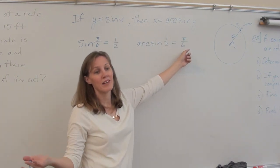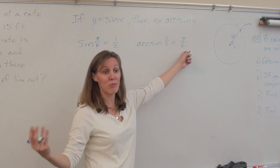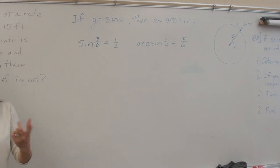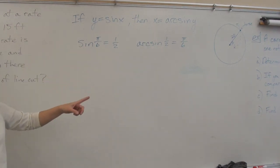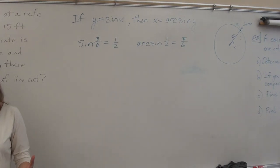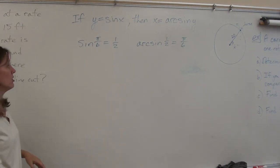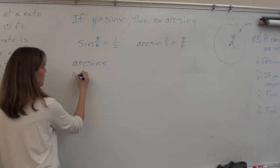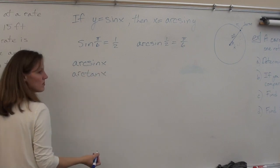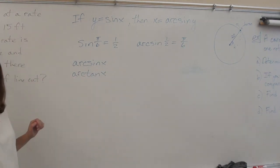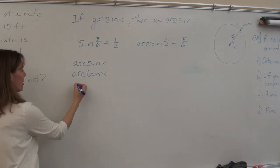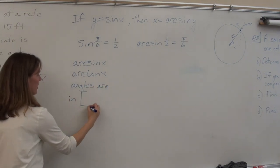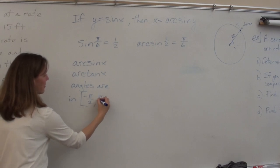How would you know if it's π/6 or 5π/6 or any of those multiples? In this class and on the AP exam, for inverse trig functions the angles will always be what are called the principal values. For arc sine and for arc tan, your angles are going to be from negative π/2 to π/2.